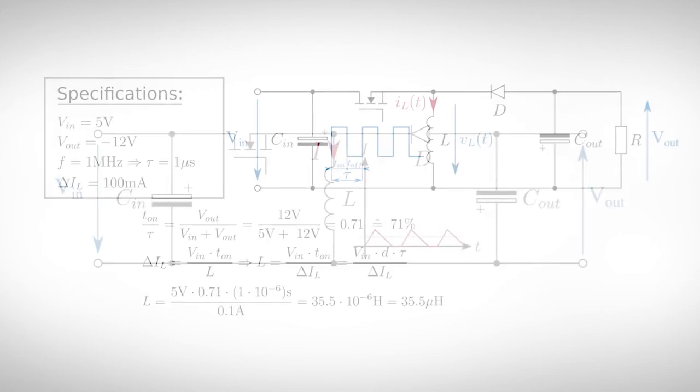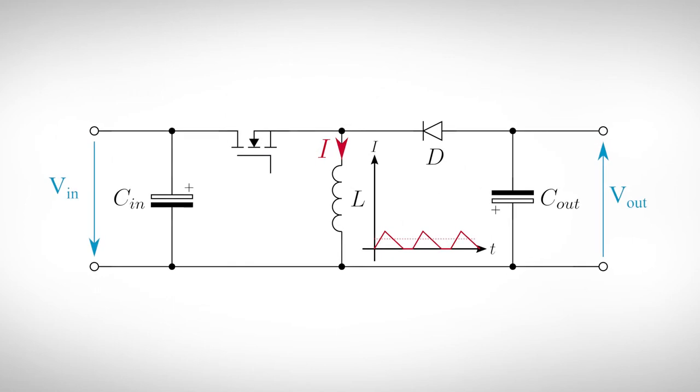As we have already seen, the discontinuous mode changes the behavior of our circuit. During off time, the current through the inductor falls to zero. Therefore, we have to reconsider a few equations.